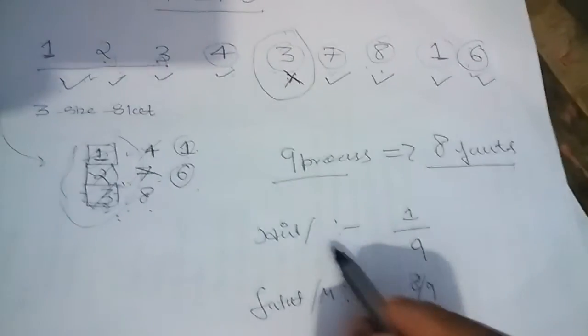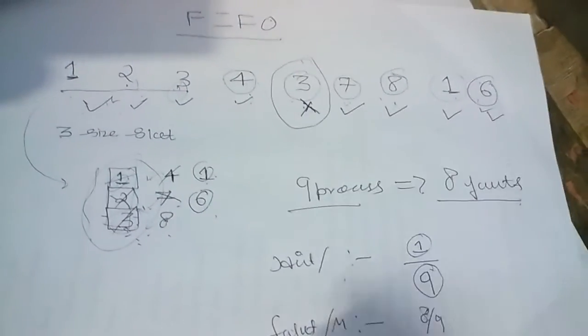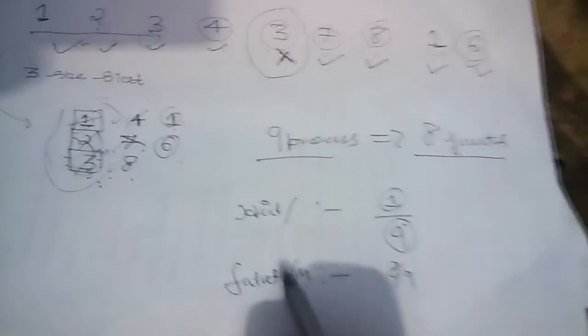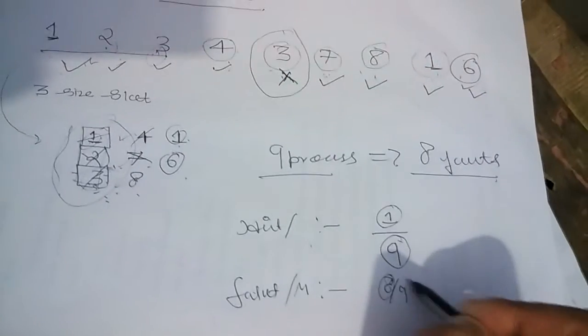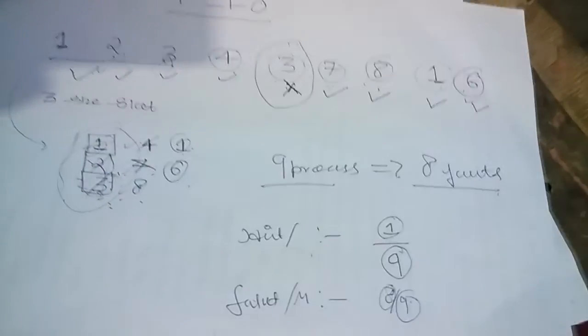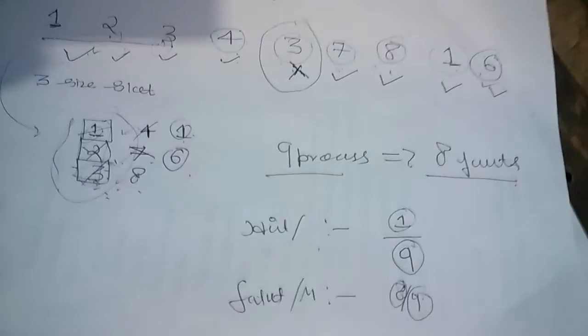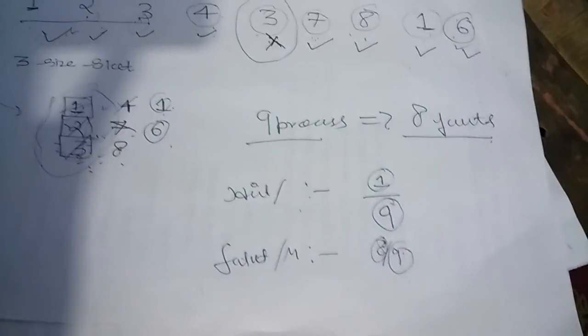Then we found out the hit ratio. Hit is the number of success upon number of total numbers of work. Fault is the total number of failures upon total number of work. Total number of work was 9. We worked out for 9 processes. Thanks for watching. See you next time.